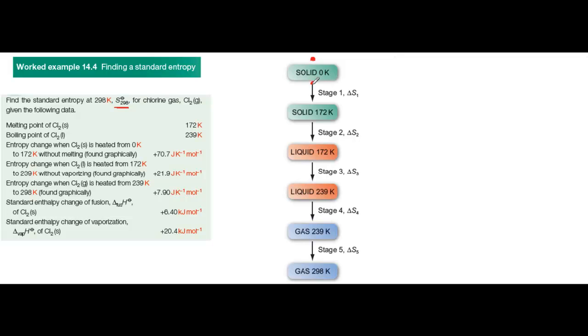The first involves simply heating the Cl2 without changing state, for example, heating from solid at 0 Kelvin to solid at 172 Kelvin.